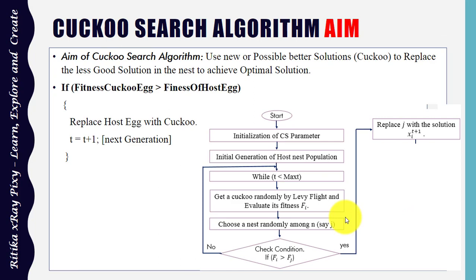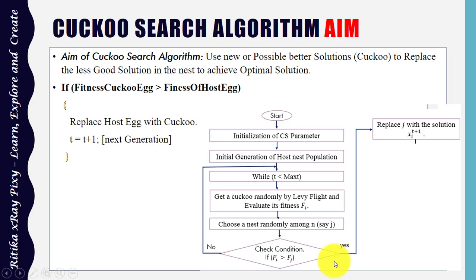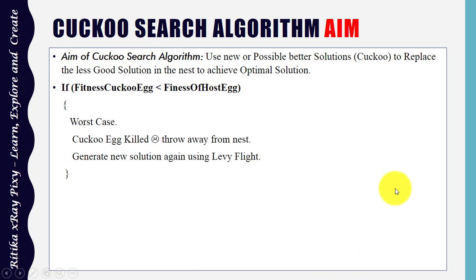The aim of the Cuckoo Search Algorithm is to use new and better solutions — the cuckoo — to replace less good solutions in the nest, in order to achieve the optimal solution. If the fitness value of the cuckoo egg is greater than the fitness value of the host egg, we replace the host egg with the cuckoo. If the fitness value of the cuckoo is less than the host bird's, that is the worst case, the cuckoo egg is thrown away from the nest and a new solution is generated using Lévy flight again.